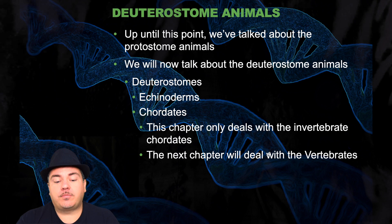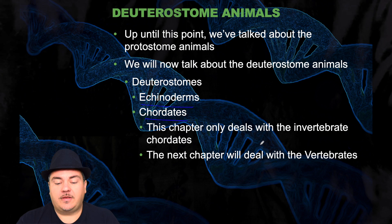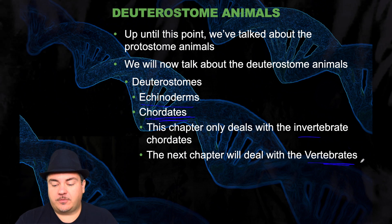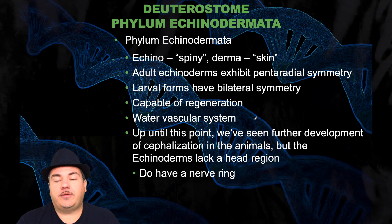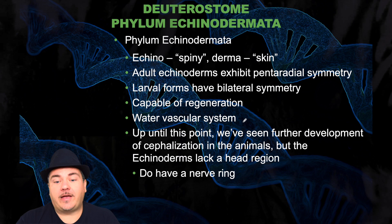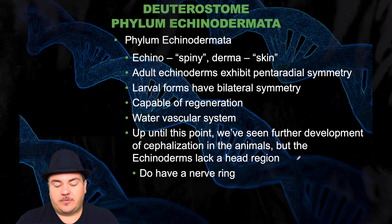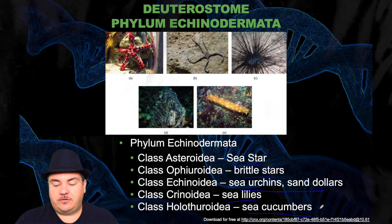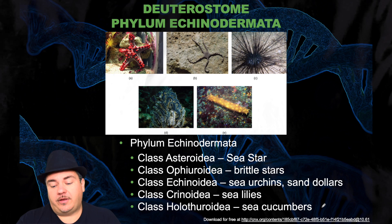Up until this point we've been talking about protostome animals. Now we're going to talk about deuterostome animals — the echinoderms and the chordates. In this chapter the only chordates we'll discuss are the invertebrates; the next chapter covers vertebrate chordates. The phylum Echinodermata — 'echino' means spiny, 'derma' means skin. Adult echinoderms exhibit pentaradial radial symmetry, while larval forms have bilateral symmetry. They're capable of regeneration, have a water vascular system, and lack a head region — though they do have a nerve ring. Examples include sea stars, brittle stars, sea urchins, sand dollars, sea lilies, and sea cucumbers.